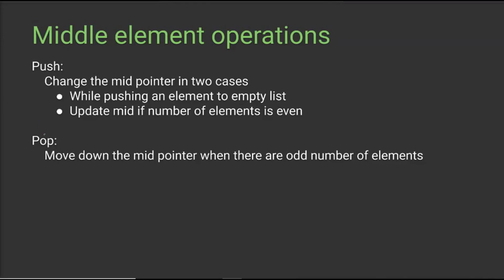Similarly for the pop operation, we have to update the mid pointer only during alternative poppings — the mid pointer is updated only when there are an odd number of elements remaining in the stack. For example, if we have three elements and we pop one to leave two, the mid pointer stays the same. But if we pop one more to leave one element, then we have to update the mid pointer. So we update the mid pointer only when there are an odd number of elements in the updated stack.